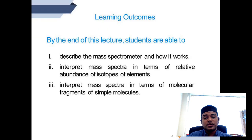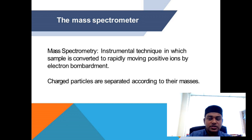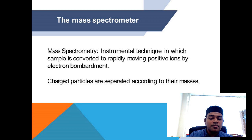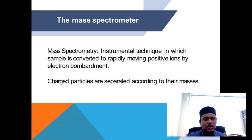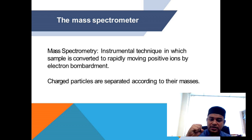So those are the learning outcomes. A mass spectrometer is an instrument in which a sample is converted into rapidly moving positive ions by electron bombardment, and the charged particles are separated according to their masses. You take an atom and put it into the device called a mass spectrometer.